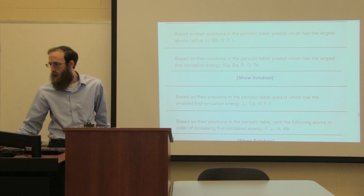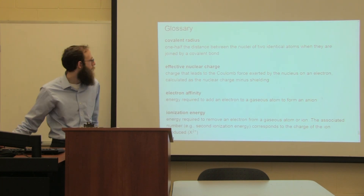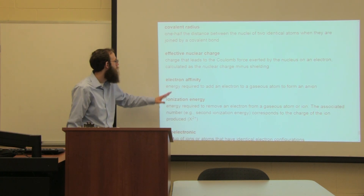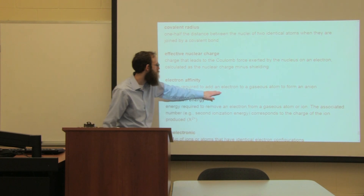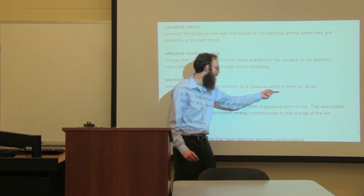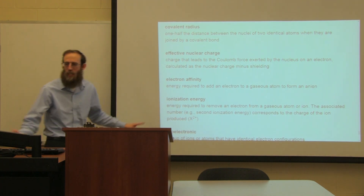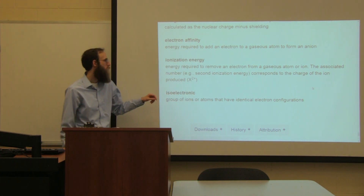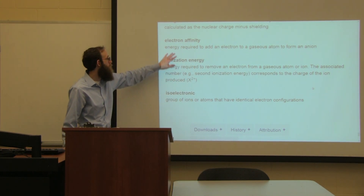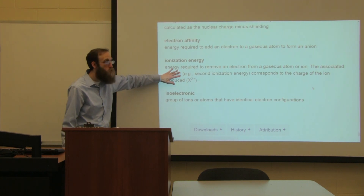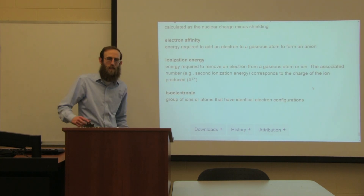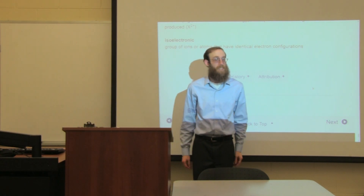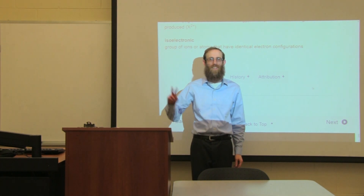That is the end of Chapter 6. Electron affinity is the energy required to add an electron to a gaseous atom to form an anion - this can be positive or negative. Ionization energy is the energy to remove an electron from a gaseous atom or ion - this is always a positive value. It always takes energy to remove an electron. That's what we've got for this chapter - let's move on to the next.